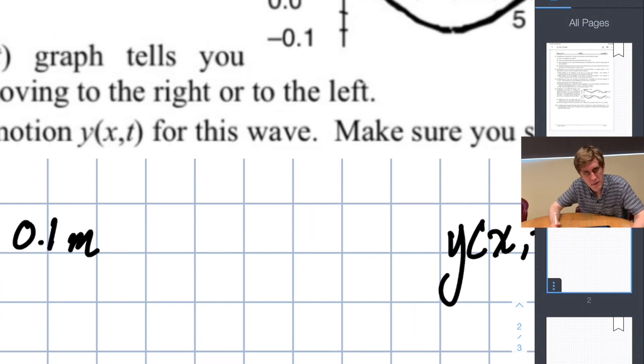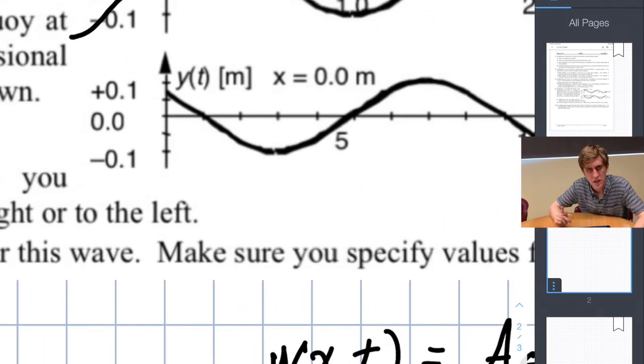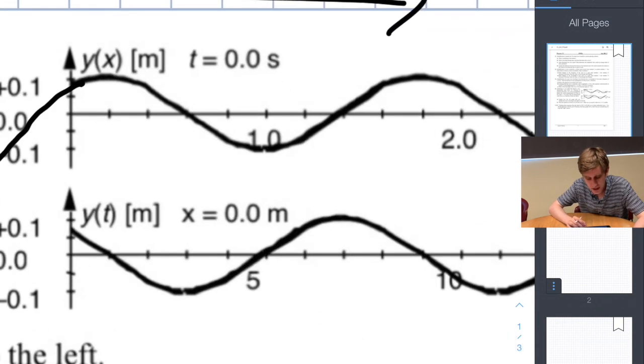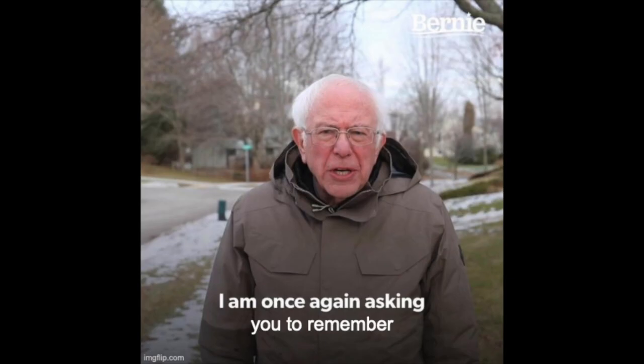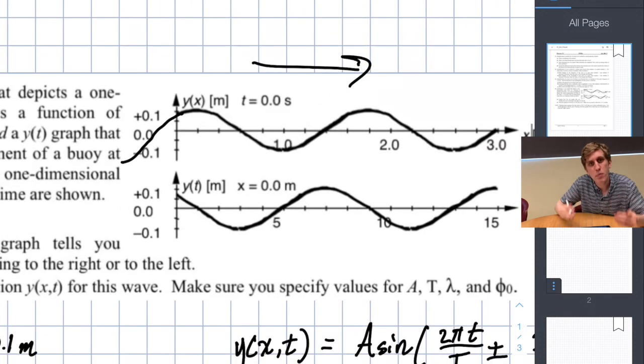What about the time period? The question is which of these graphs should give us information about the time period? The answer is it has to be the y of t graph. The y of x graph tells us nothing about how fast the wave actually moves. Remember it's just a photograph of the wave at a particular time.